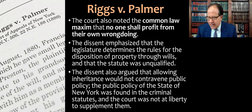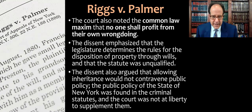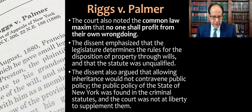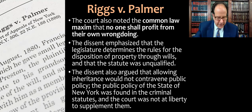The dissent also argued that allowing inheritance would not really contravene public policy. The public policy of New York was found in the criminal statutes, and the court was not at liberty to supplant them. Basically: we've punished this guy — he's going to be in jail for a long time. The dissent was worried about judicial activism by the majority, saying the majority is legislating from the bench. The legislature already addressed the problem of heirs killing the person they're going to inherit from — we charge those people with murder. That's a perfectly good law for dealing with this, according to the dissent.